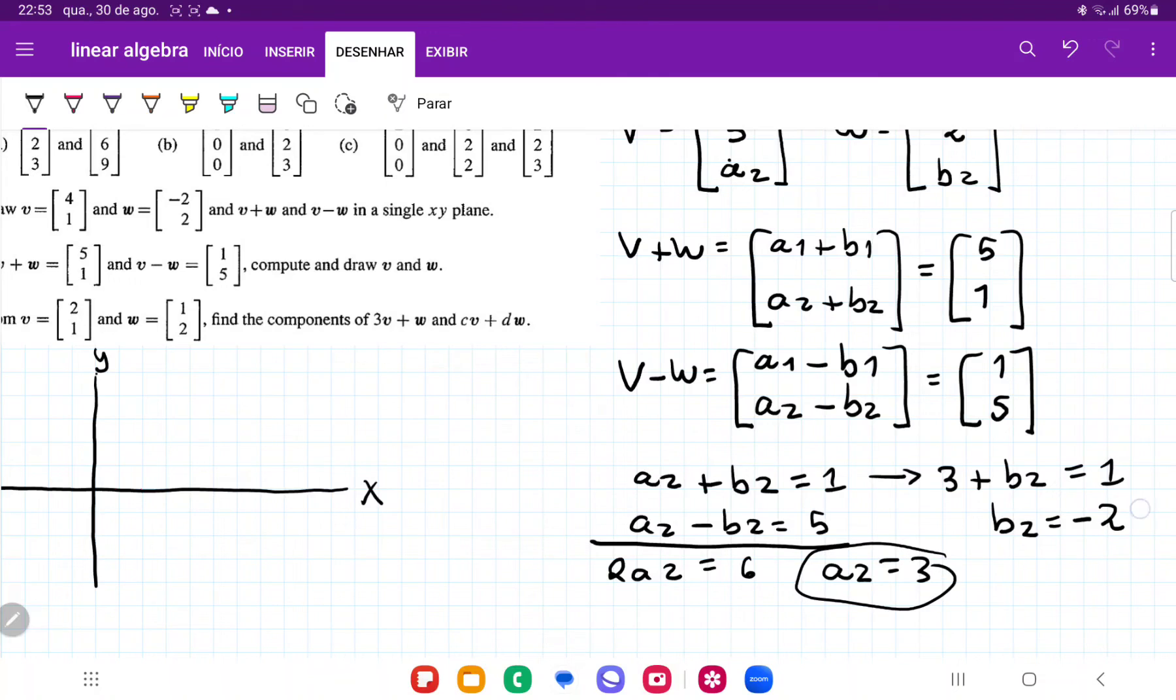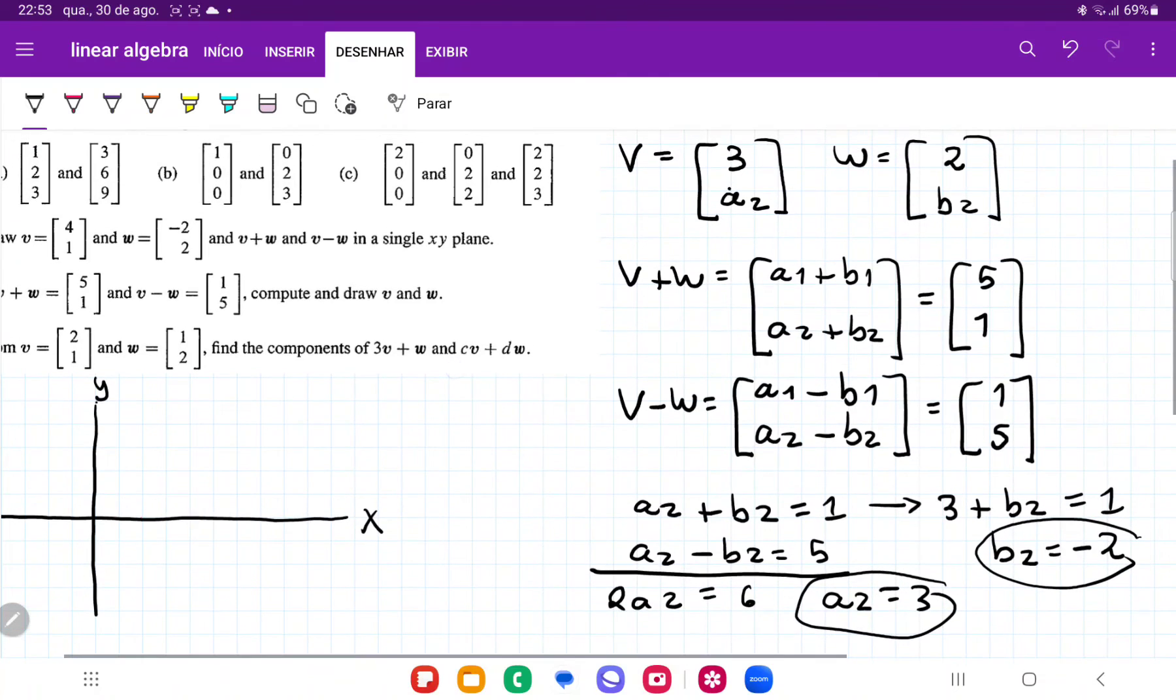So we have the value for a2, for b2. So let's go ahead and plug that in. So it's going to be 3, 3, and 2 minus 2.